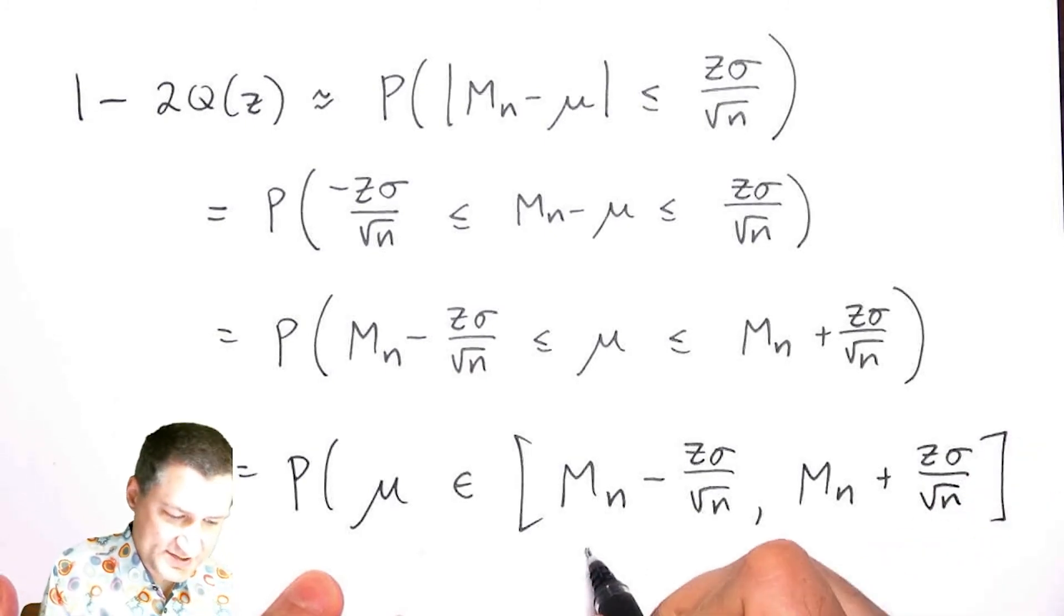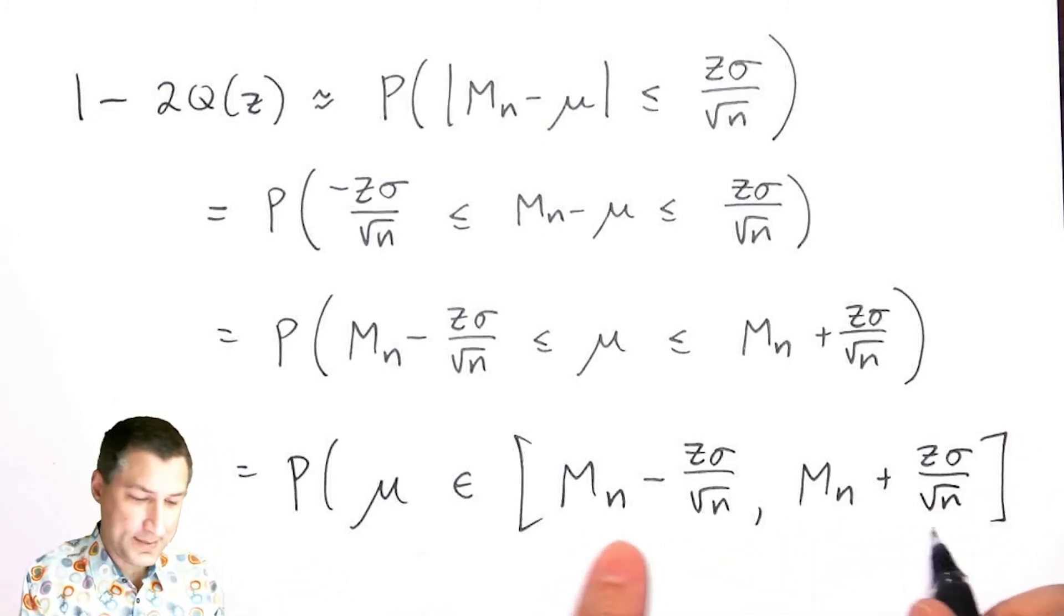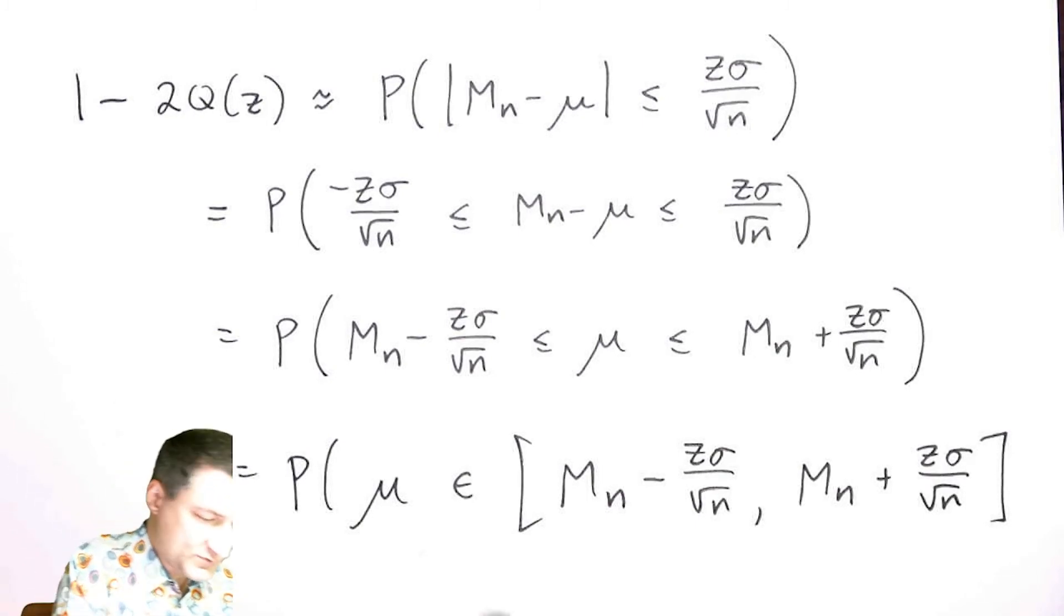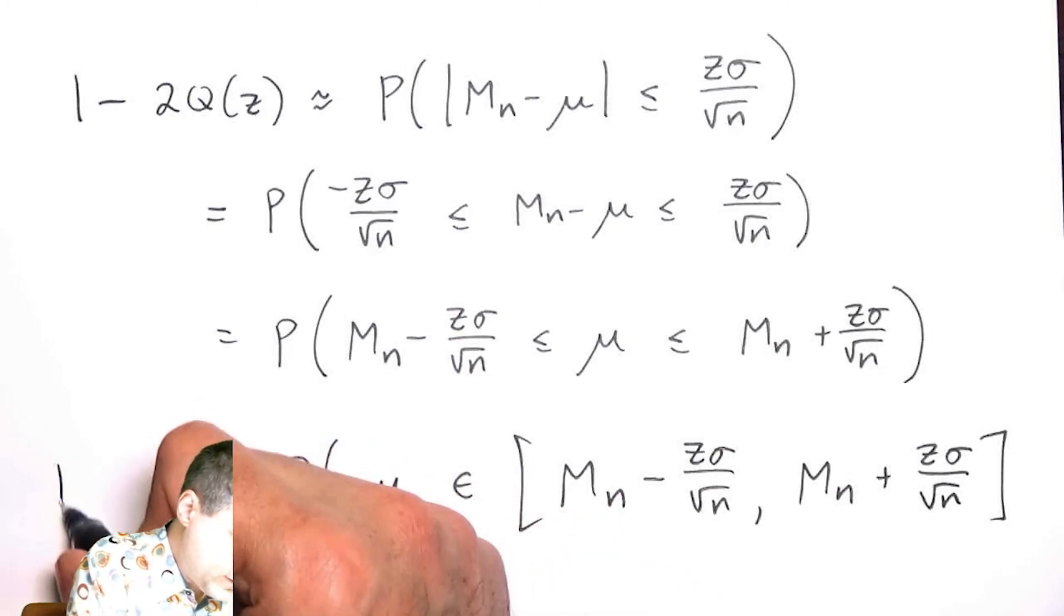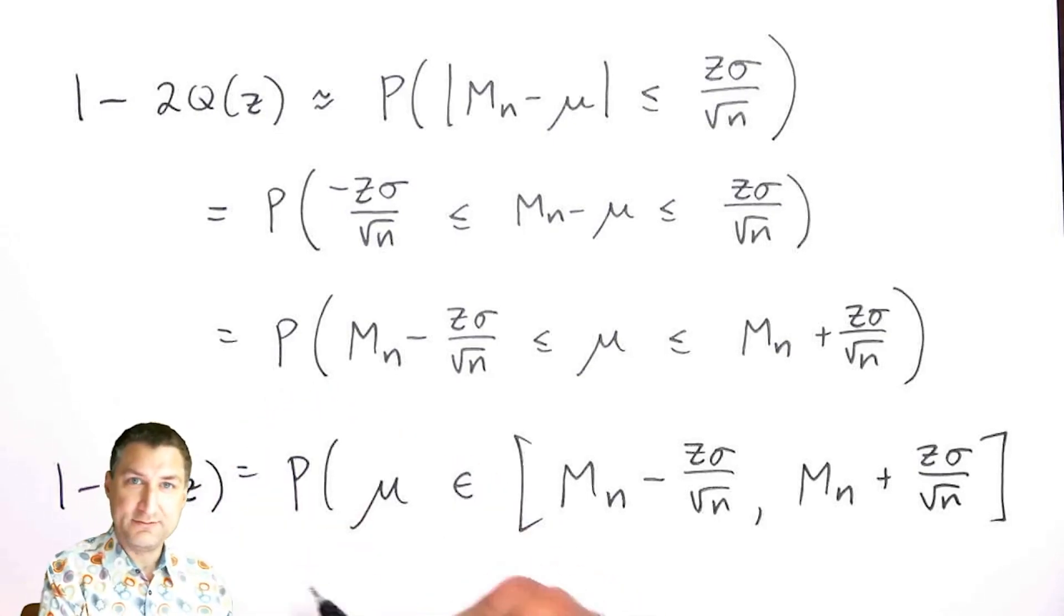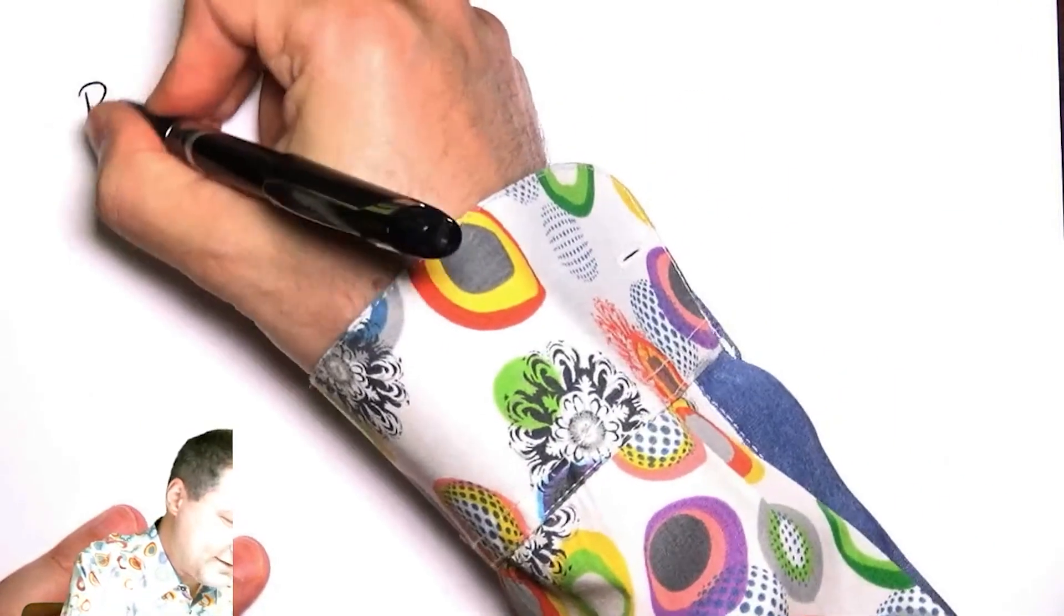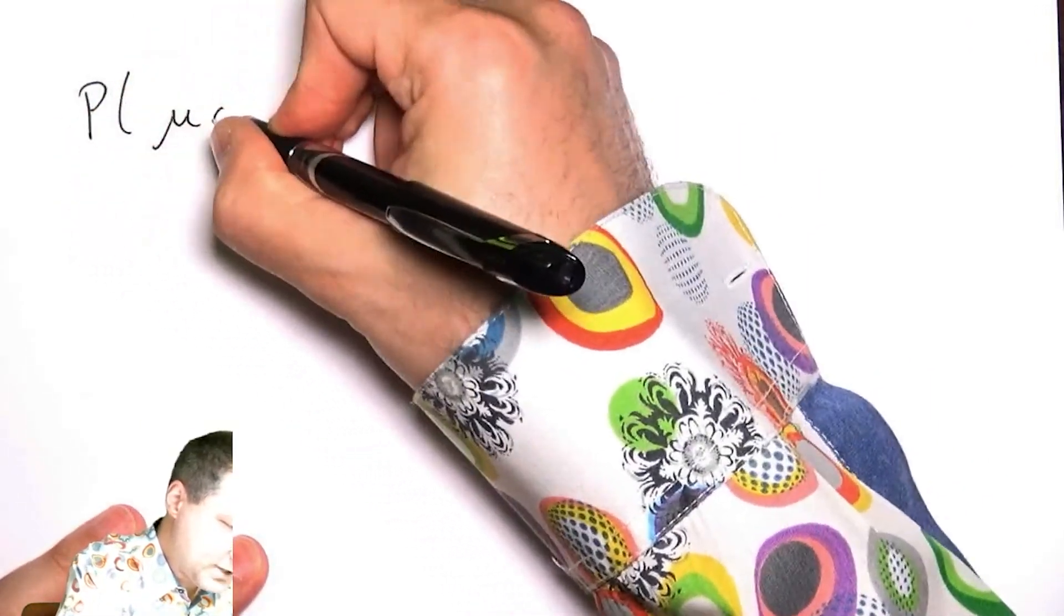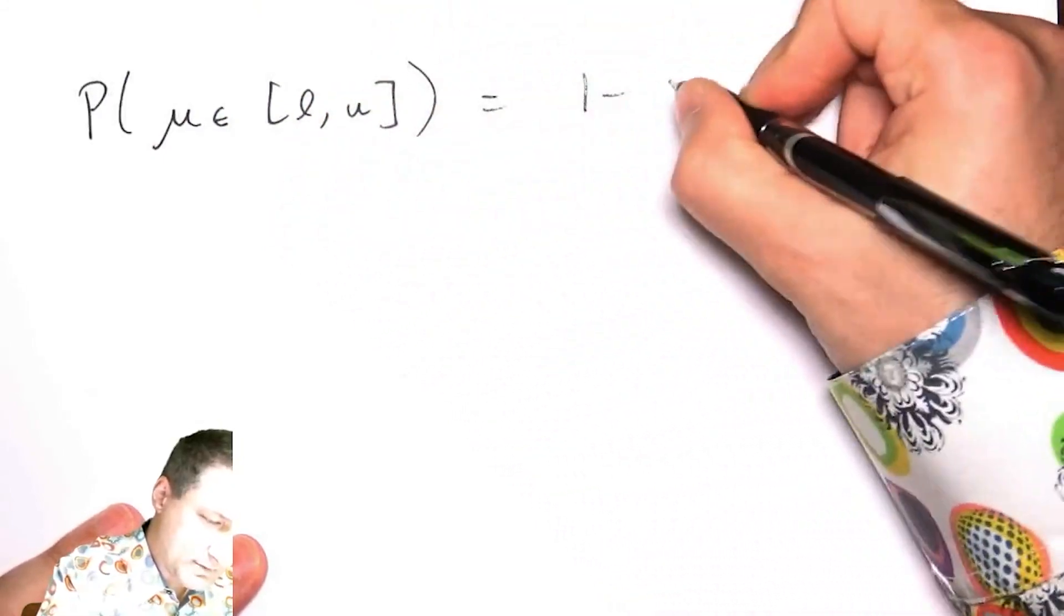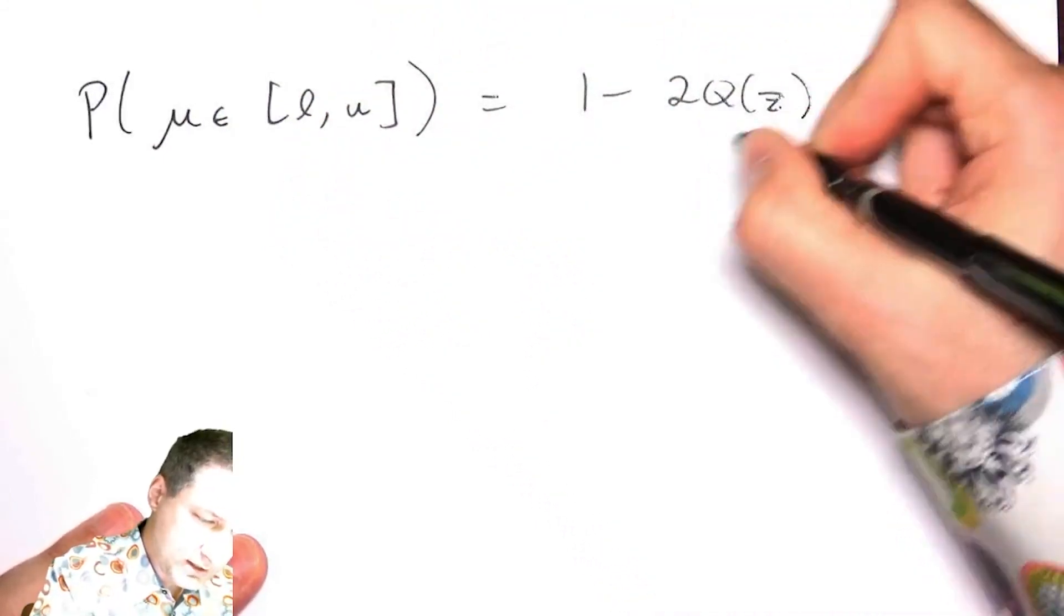This is what I see from my measurements and the actual deviation I get. I can rewrite this as: the probability that my mean is in this range equals 1 - 2Q(z), which I earlier said was 1 - α.